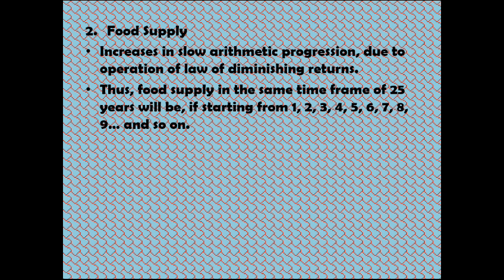The second doctrine is food supply. Food supply increases in slow arithmetic progression due to the operation of the law of diminishing returns in agriculture. In the same time frame of 25 years, starting from one, food supply will be 2, then 3, then 4, then 5, and so on. Comparatively, food supply increases at a much slower pace. The relationship between food supply and population is explained with the help of a graph, which will be discussed in the next video.